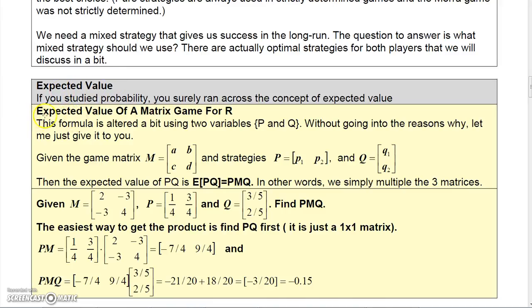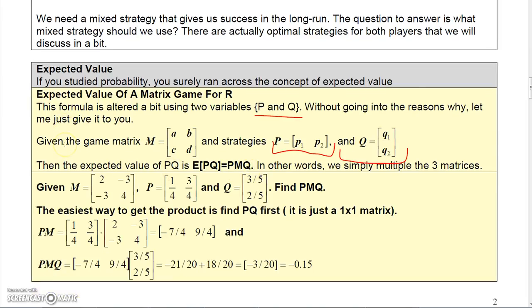So in order to do this, we need to talk about expected value. If we talk about the expected value of a matrix game for person R, we're going to alter the formula a bit using two variables, P and Q. Let me just give it to you. Given the game matrix M, and these are the probabilities for P, and these are the probabilities for Q. In other words, this is for player R, and this is for player C. Then the expected value of P, M, Q is actually P times M times Q. So in other words, if we multiply these three matrices together, we actually get the expected value of P, M, Q.